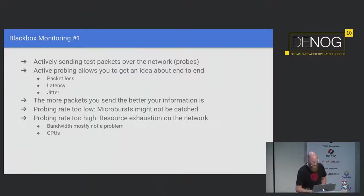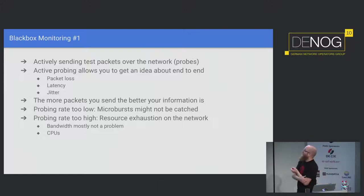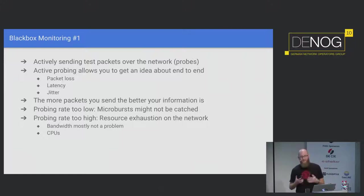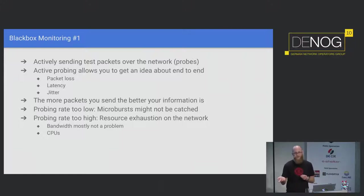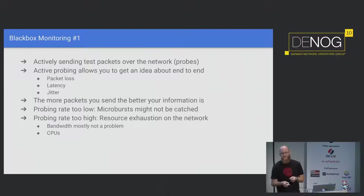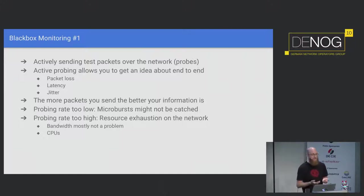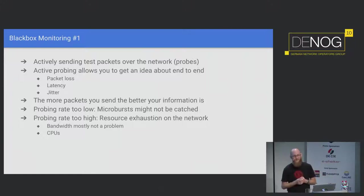Black box monitoring means actively sending test data through your network and making measurements to see if it actually works. Actively probing allows you to get an idea about end-to-end performance: what is the packet loss from point A to point B, what is the latency, what is the jitter? The more packets you send, the better idea you get. If you probe with a too low rate, you might miss microbursts where routers are actually dropping packets — if you probe at one packet per second and you have microbursts of a few milliseconds, you won't see it. But if you probe with a too high packet rate, you have resource exhaustion on the network or the probing host.